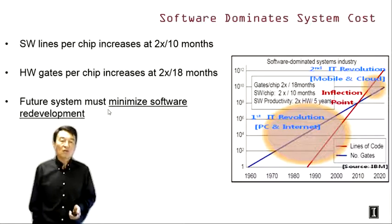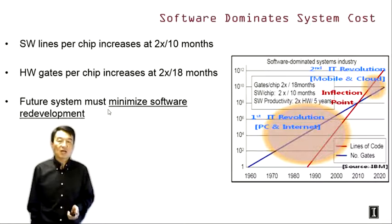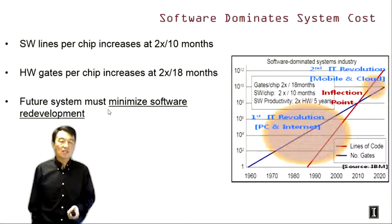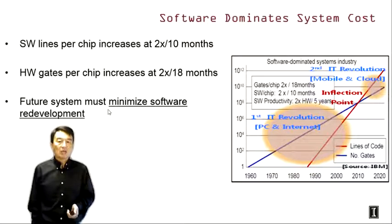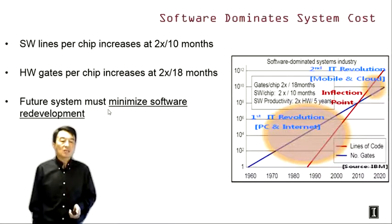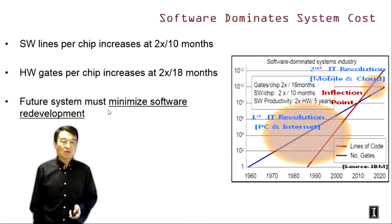Software cost has been growing much faster than hardware costs — two times every 10 months versus two times every 18 months for hardware. After 2010, the software cost has essentially exceeded the hardware cost and has been growing faster, so software cost is going to be much, much more than hardware costs in the years to come. This leads to the need to minimize software development and redevelopment costs, which brings us to the considerations of scalability and portability.